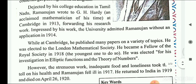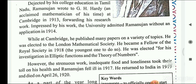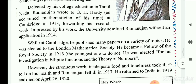Dejected by his college education in Tamil Nadu, Ramanujan wrote to G.H. Hardy, an acclaimed mathematician of his time at Cambridge, in 1913, forwarding his research work. Impressed by his work, the university admitted Ramanujan without a formal application in 1914. After being rejected by his own college, he wrote to one of the great mathematicians of his time, who was impressed and called Ramanujan to Cambridge.